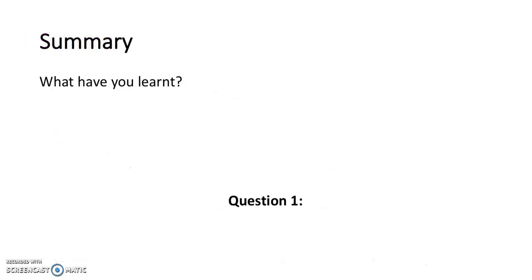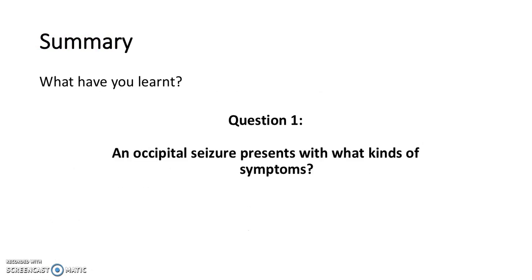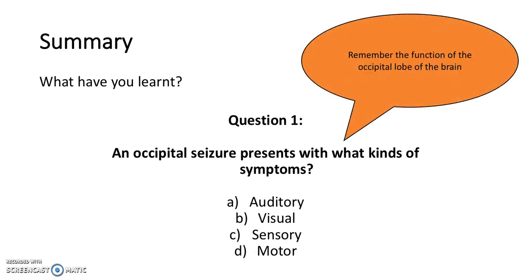Now let's find out what you've learned. Question 1: an occipital seizure presents with what kinds of symptoms? Is it auditory, visual, sensory or motor? Remember what the function of the occipital lobe of the brain is. The answer is visual symptoms.